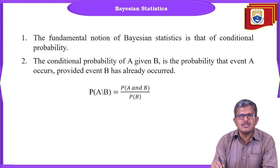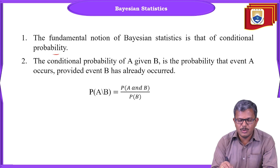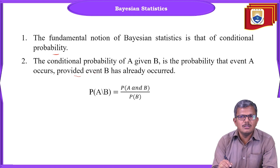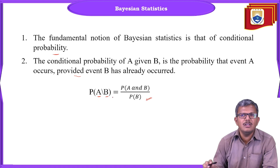Let us talk about Bayesian statistics. The fundamental notation of Bayesian statistics is the conditional probability — the probability of A given B is the probability that event A occurs given that event B has already occurred. In simple words, calculating the probability of A by taking the support of the already-occurred event B is: P(A|B) = P(A and B) / P(B). This is the equation through which we can calculate the probability of A for a given event B.